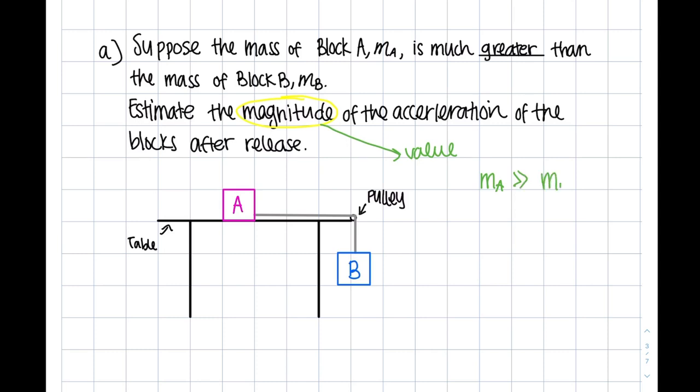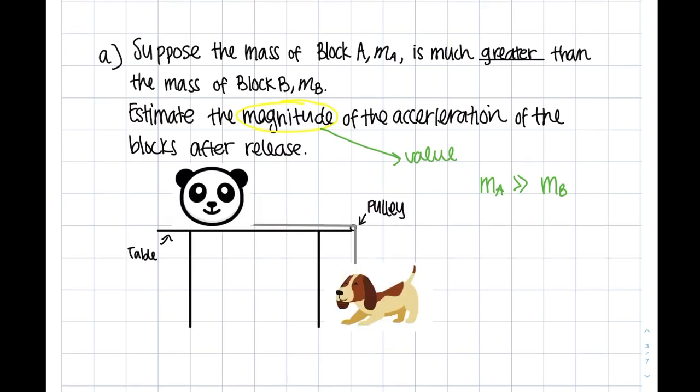Personally, I'm a visual learner. So when I was taking this class, I tried to come up with some crazy ideas to help me. For example, the first thing that came to my mind was using a panda and a puppy to show that block A has a greater mass than block B. Without thinking of formulas or numbers and just using this panda and puppy scenario, what could we say about acceleration?